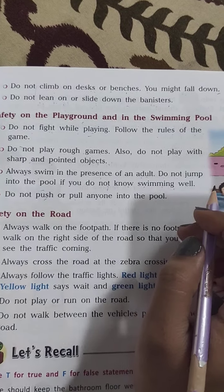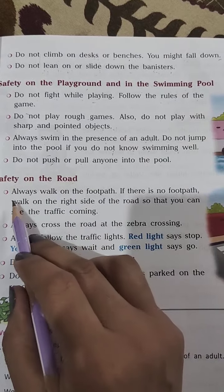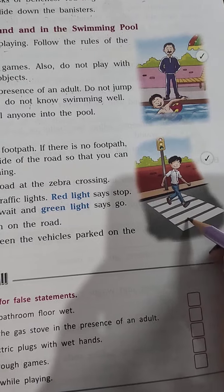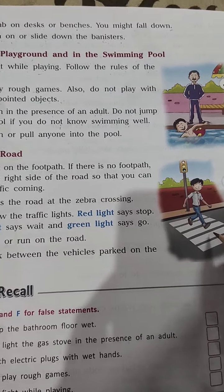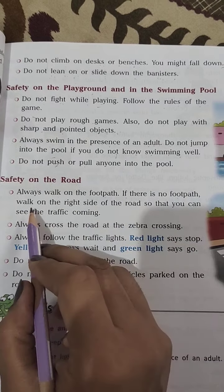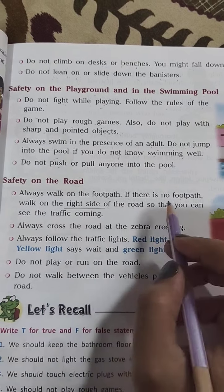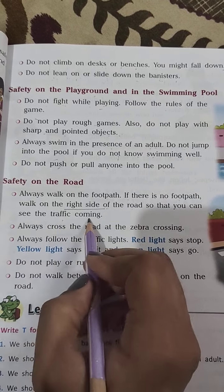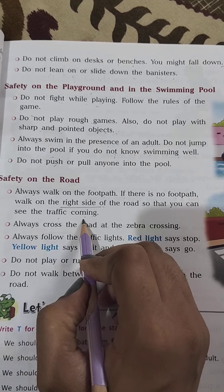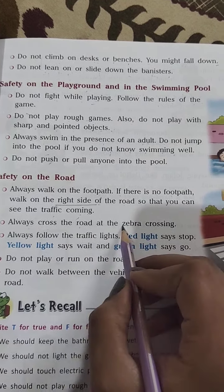Now, safety on the road. First, always walk on the footpath. If there is no footpath, walk on the right side of the road so that you can see the traffic coming. The second point is: always cross the road at the zebra crossing.